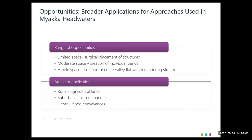An opportunity exists to apply these approaches to other areas. This case study offers a range of options: when working in limited space, you can use surgical placement of structures to guide flow; when you have moderate space, as in Area 2, you can fit individual bends; and when you have ample space, you can create an entire valley with a meandering stream as in Area 1. This can apply to various areas beyond rural lands — other agricultural lands with significant ditching going on since the 1920s, suburban areas where channels no longer interact with their floodplain due to stormwater inputs and impervious surfaces, and urban areas with larger canals acting as flood conveyances.